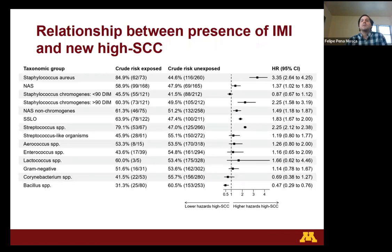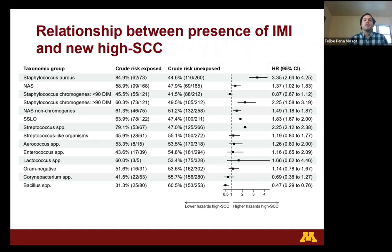In the first part of the presentation I discussed potential risk factors and distribution of different microorganisms leading to intramammary infections. Now I will move to the association between having an intramammary infection and the impact it can have on somatic cell count or subclinical mastitis during lactation. On this slide, the first column shows the different taxonomic groups found in the study, the next column shows the risk of high somatic cell count in cows with an intramammary infection by a given pathogen, the following column shows the risk in cows without that infection, and lastly the hazard ratio from a regression model assessing the association while accounting for potential confounders.